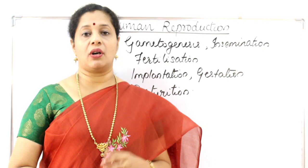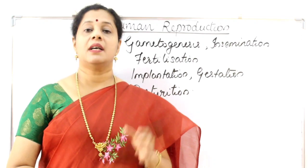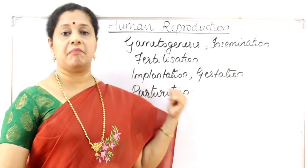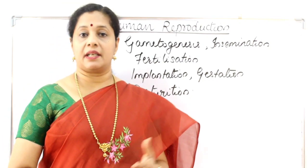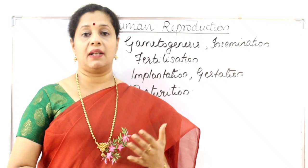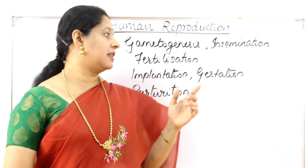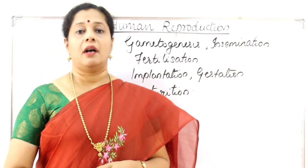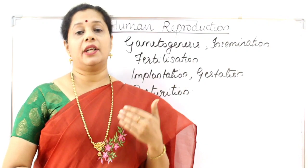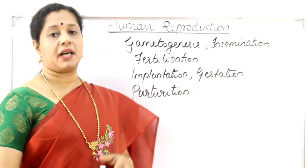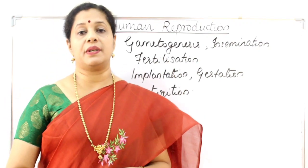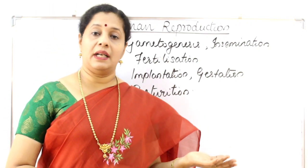During the initial stage called blastosis, the embryo gets attached to the uterine wall and that process is called implantation. Followed by that, placenta formation happens and the baby will be developing in the mother's womb for the next 9 months — that is called the gestation period. When the gestation period completes, delivery of the baby happens, that is called parturition. These are the main events we are going to discuss in this chapter, similar to what we learned in plants.